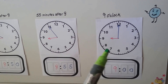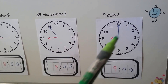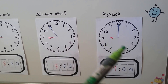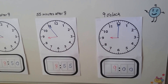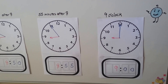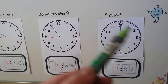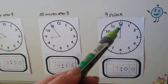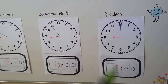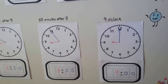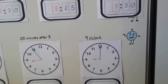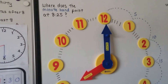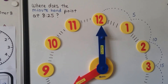We can do it all over again: 9:05, 9:10, 9:15, 9:20, 9:25, 9:30 — all the way around to 10 o'clock. Then we could do 10:05, 10:10, 10:15, and so on.